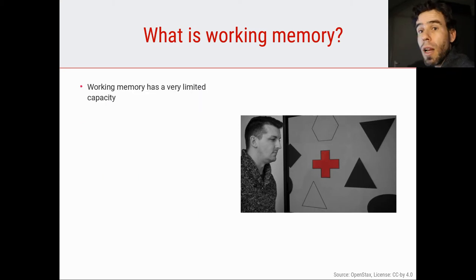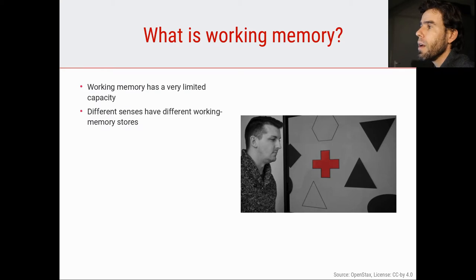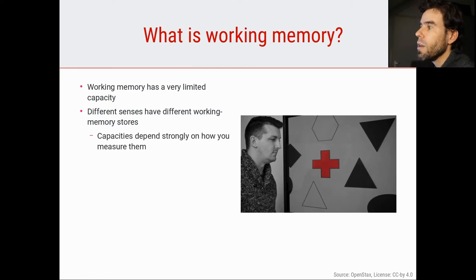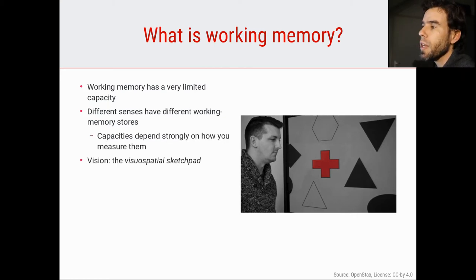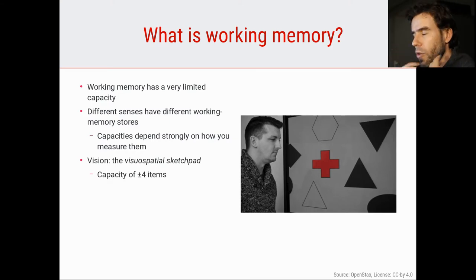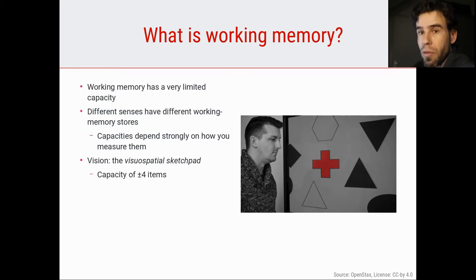Now, working memory has a very limited capacity. I gave the example that you're able to remember only three or four digits, and it depends on the sense that you are using for your working memory, and also on how you measure its capacity. But roughly speaking, visual working memory — sometimes called the visual-spatial sketchpad — has a capacity of about four items. So in your mind's eye, you can memorize about three to four items visually.